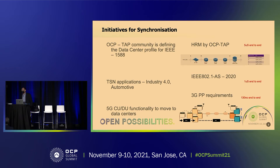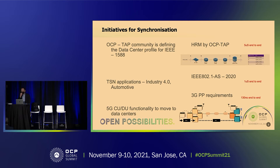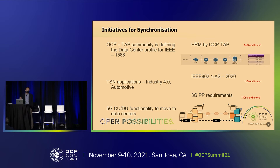OCP, the OCP TAP group, and our community have already started initiatives for synchronization. This morning's session talked about the data center profile for IEEE 1588 PTP. In that implementation, 5 microseconds is already required for end-to-end time accuracy. If you think that's a stringent requirement, the next few lines show it's quite generous — for TSN, the Time Sensitive Network, even 1 microsecond end-to-end time accuracy is required.